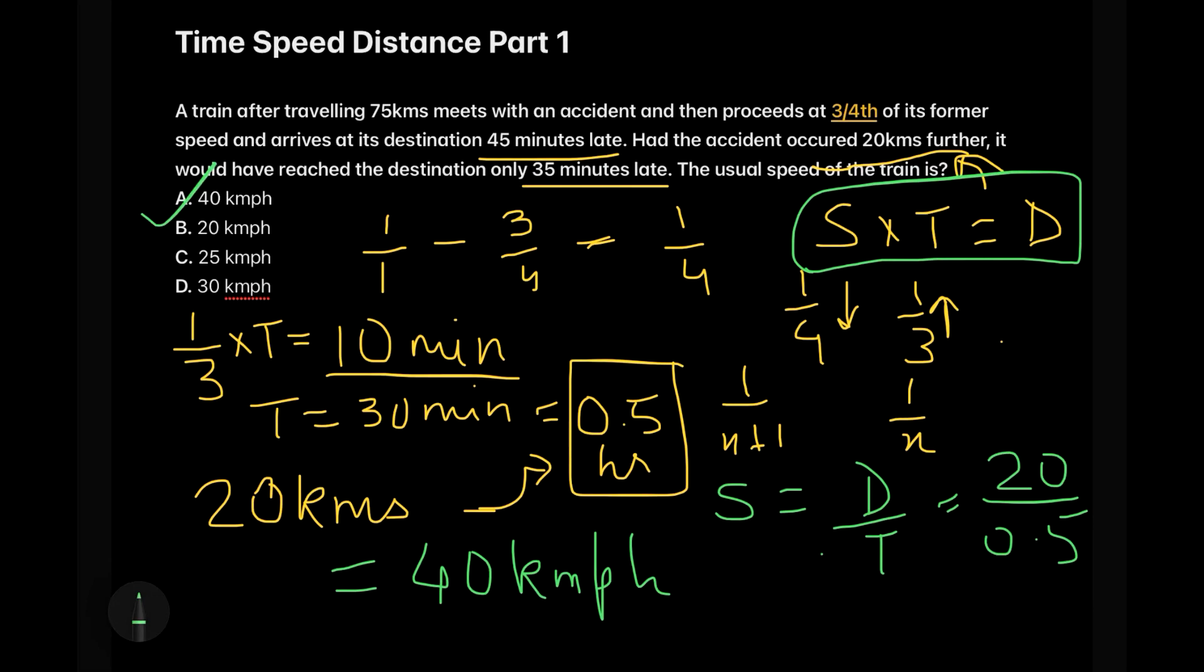So that's how simple the question was. You need to just find out the decrease in the speed and find out the corresponding increase in the time. That would be one third. This one third of time is equals to 10 minutes. So the total time will be 30 minutes, that is half an hour. And this half an hour change is due to the 20 kilometers of change. And so we would be having our answer as distance by time, 20 by 0.5, leading to 40 kilometers per hour.